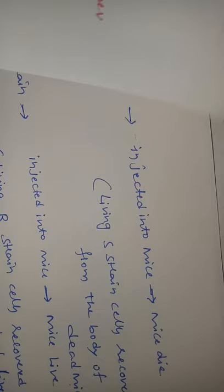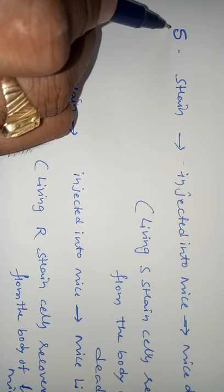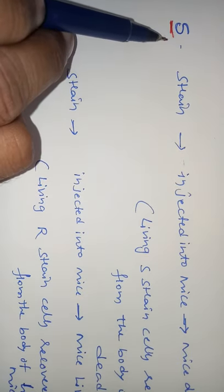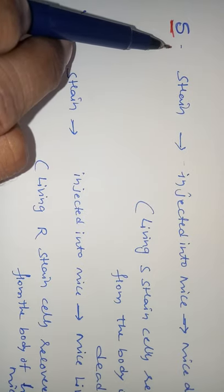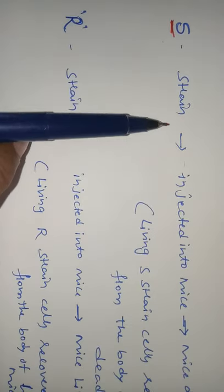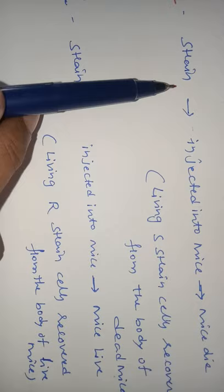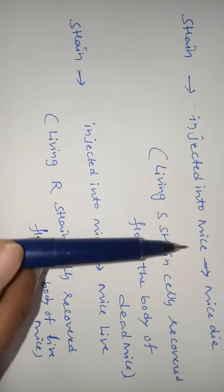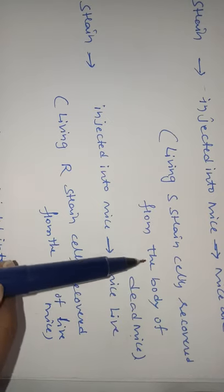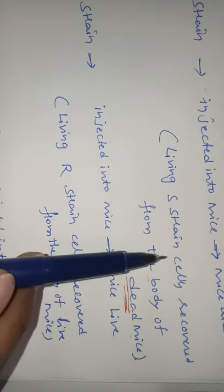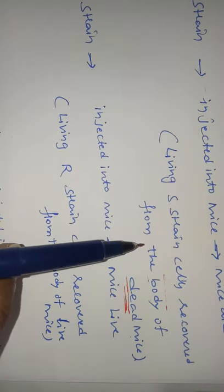They conducted experiments on mice. First, they injected the S-strain — the smooth strain that consists of the polysaccharide mucous membrane — into the mice. The mice died because the polysaccharide present is responsible for causing the disease; the mice got pneumonia and died. The living S-strain cells were then recovered from the body of the dead mice.